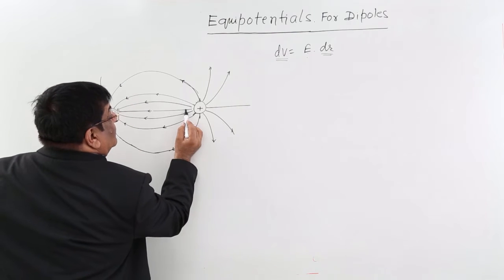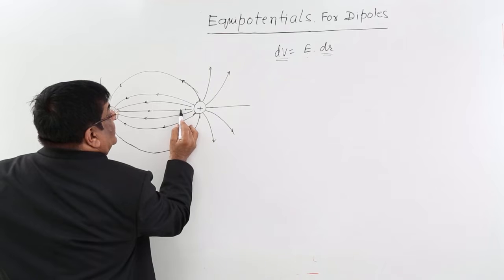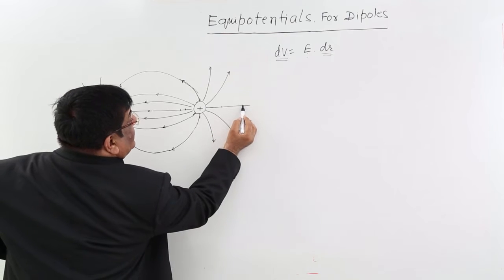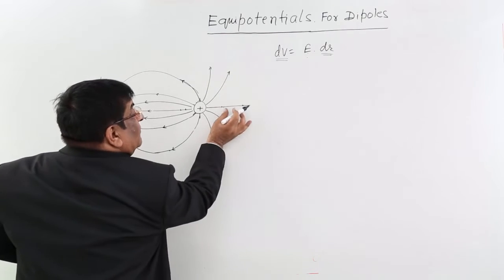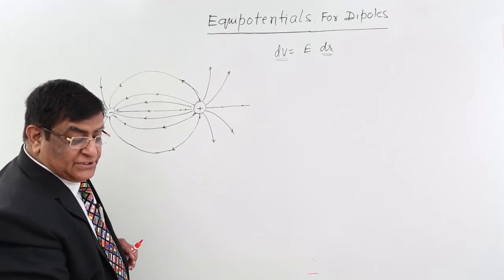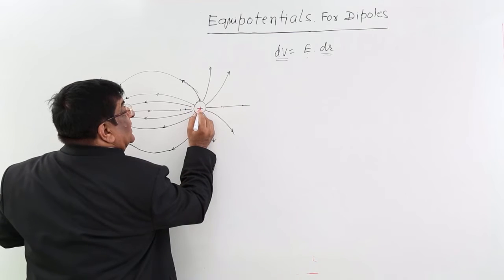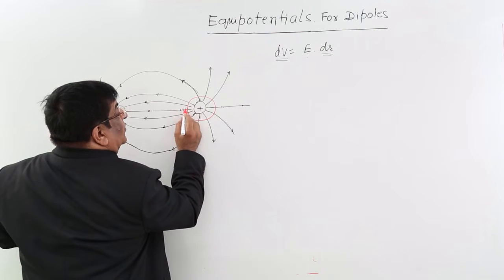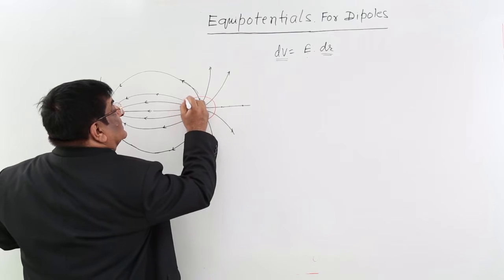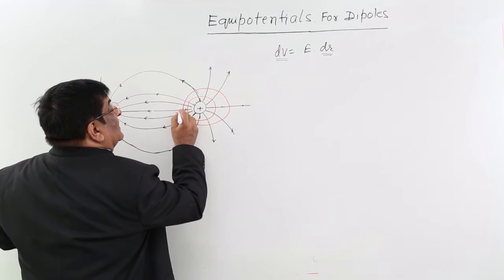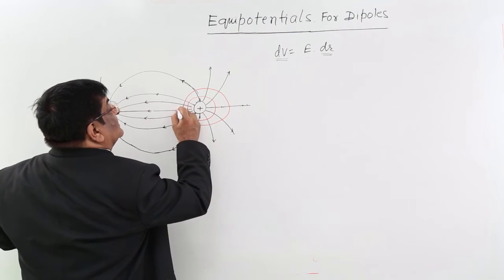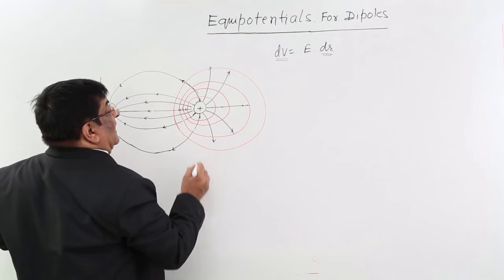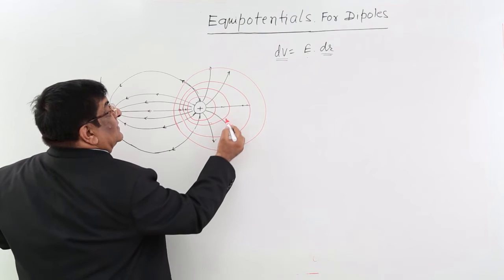So here we get 5 volts, here we get 10 volts — 10 volts, 5 volts, this much distance. Here we get 5 volts and here we get 10 volts. Why? Because the electric field is weak here, so dr will increase. Then what will be the shape of the equipotential? The equipotential very close to the charge may be parallel to it, but further out it will have a larger distance on each side, and we must keep in mind everywhere that this angle should always be a right angle.